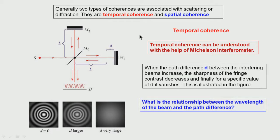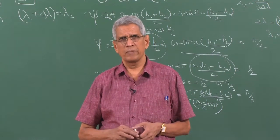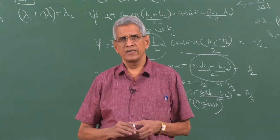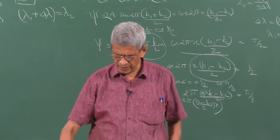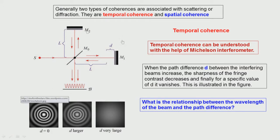This experiment tells us the path difference over which, even though we say the beam is monochromatic, coherence is maintained. In an ideal perfectly monochromatic beam, constructive and destructive interference should occur at any distance. But in reality the line width limits the distance over which interference can be seen — that is the information obtained from the Michelson interferometer experiment.